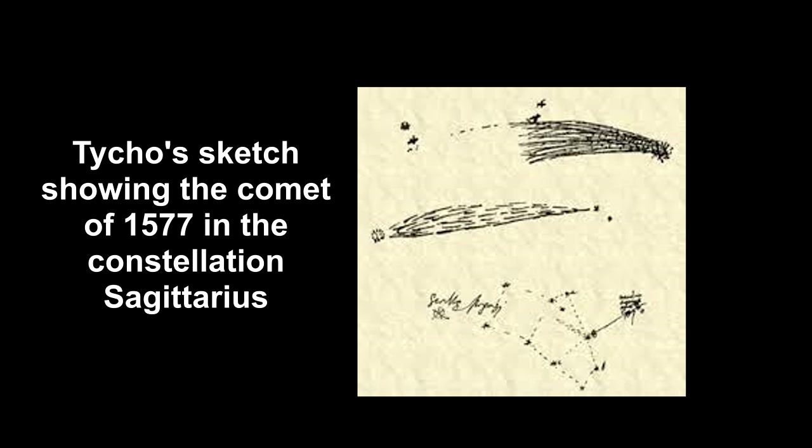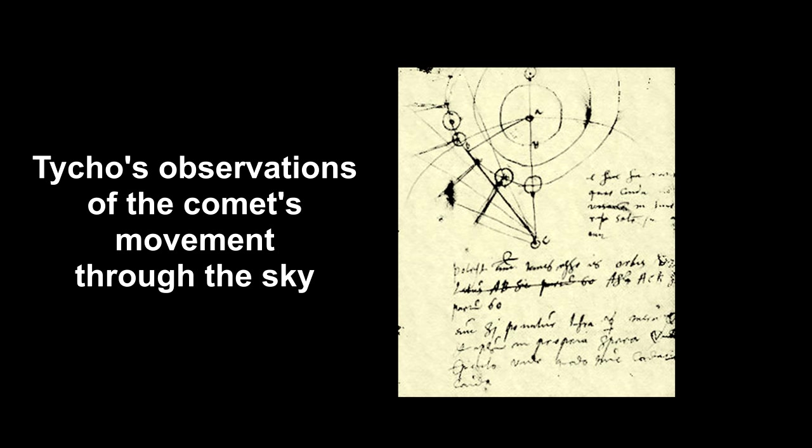From his data, he concluded that the comet must be at least six times further away from the Earth than the Moon. This took it out of the Earth's atmosphere and started people thinking differently about comets and planets.